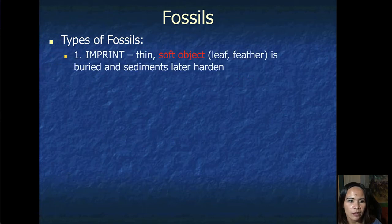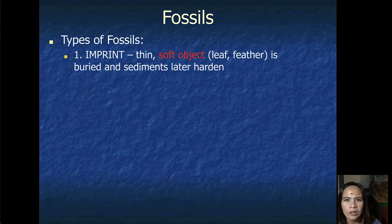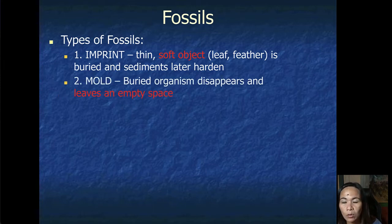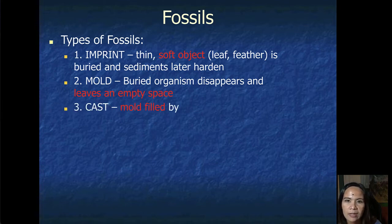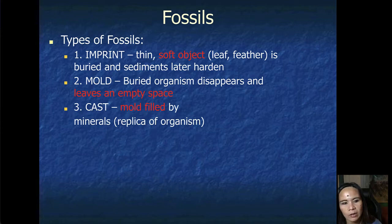There are different types of fossils. First is your imprint, which is a thin, usually thin and soft object. Sometimes they are imprinted in the leaf or feathers that is buried in sediment that later hardens. Second is the mold. These are organisms that are buried, disappear, and leave an empty space. The third one is your cast. This is a mold filled by minerals or kind of like a replica of the organism.